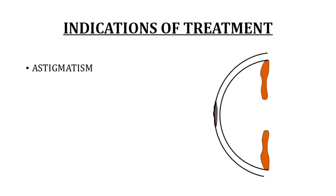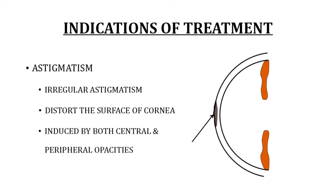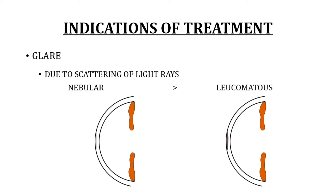Corneal opacities also affect vision by inducing astigmatism. The type induced is usually irregular astigmatism because the opacities distort the surface of the cornea, and this is caused by both central as well as peripheral corneal opacities. Corneal opacity can also cause glare due to scattering of light. Interestingly, the glare caused by a nebular corneal opacity causes more discomfort to the patient than that caused by the denser leucomatous corneal opacity.